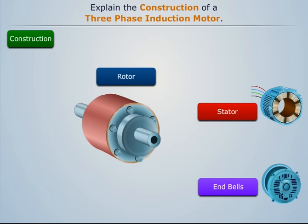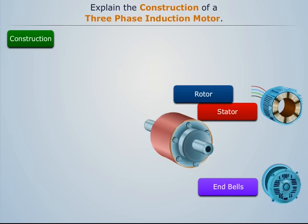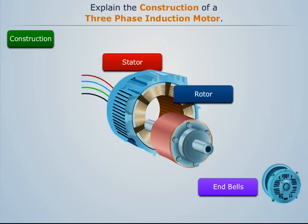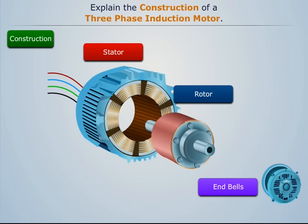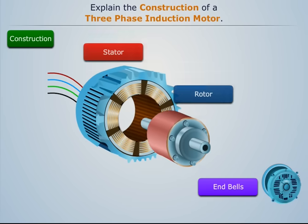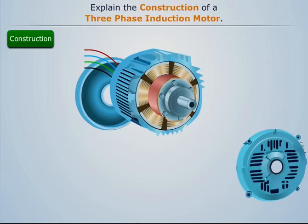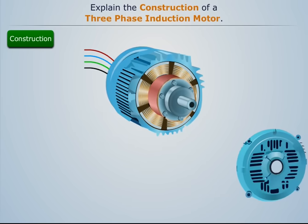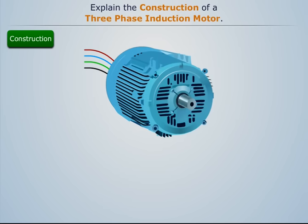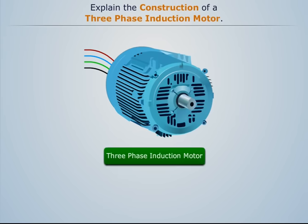This forms the rotor of the induction motor. Now place this rotor inside the stator carefully, and then finally attach the two end bells to it to form a three-phase induction motor. Thus we have constructed a three-phase induction motor.